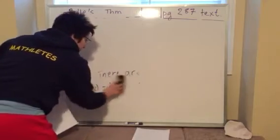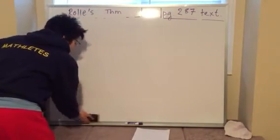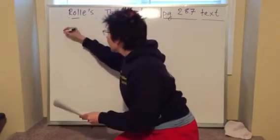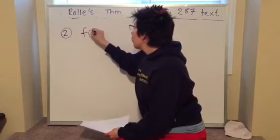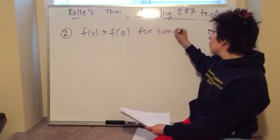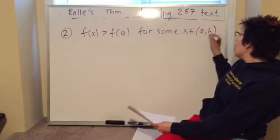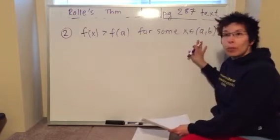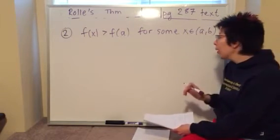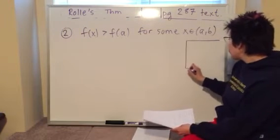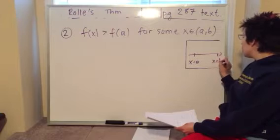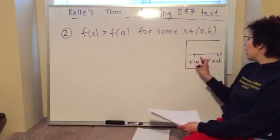The second case is that f(x) is strictly greater than f(a) for some x in the open interval (a, b). We work in the open interval because we're trying to find c there. So here is x = a and x = b on a picture — f(a) equals f(b), but f(x) is greater than f(a) for some x in between.